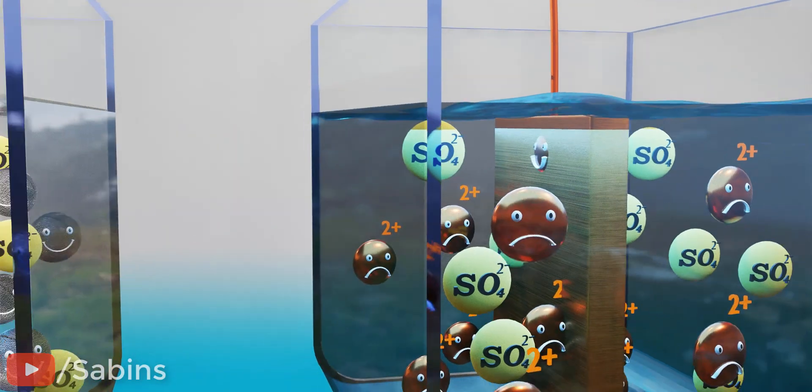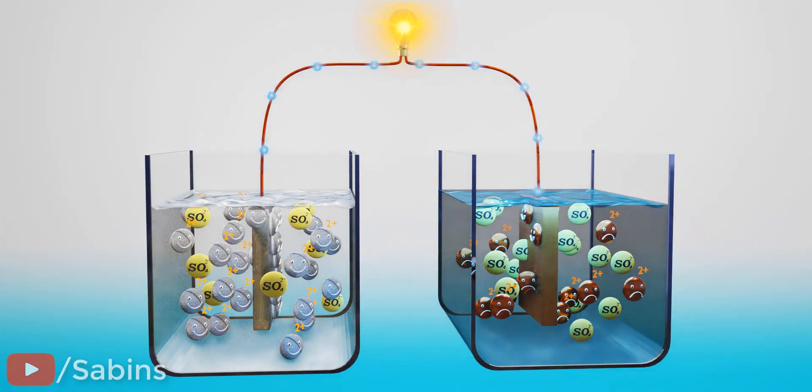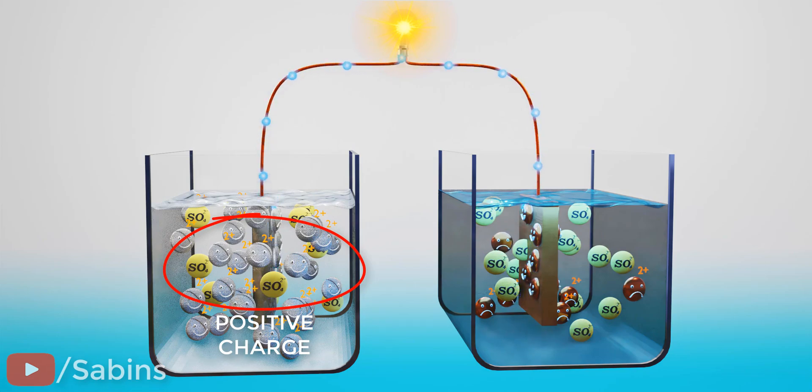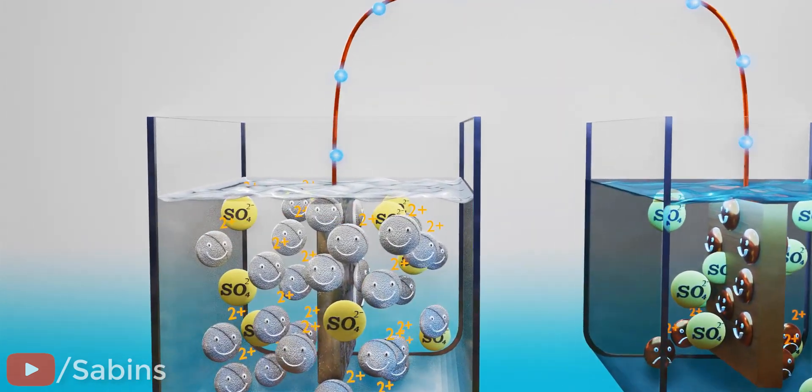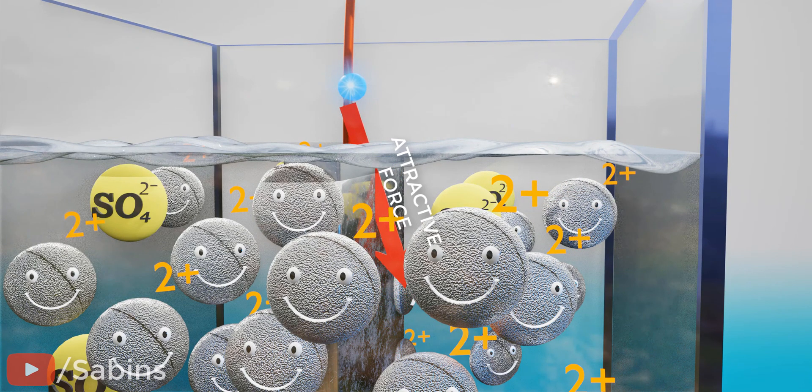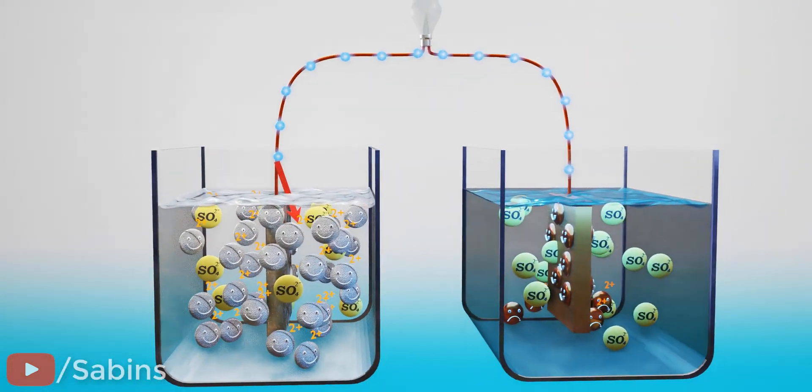However, there is an issue. You might have noticed that in the course of this process, positive charges are accumulated on the left side, and negative charges are accumulated on the right side. As these charges build up, they block the journey of electrons. Here you can clearly see how the built-up charges impede electron flow.